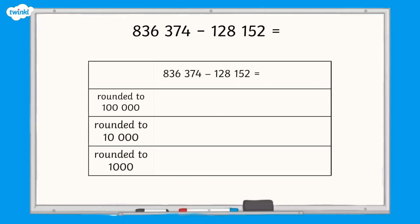We can put our rounded numbers in our approximate calculations. So 836,374 subtract 128,152 becomes 800,000 subtract 100,000,